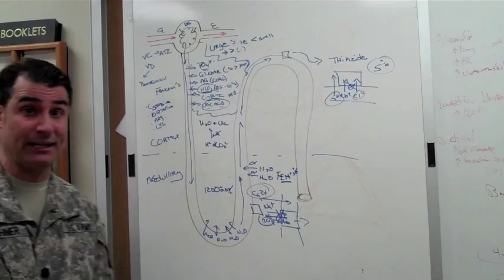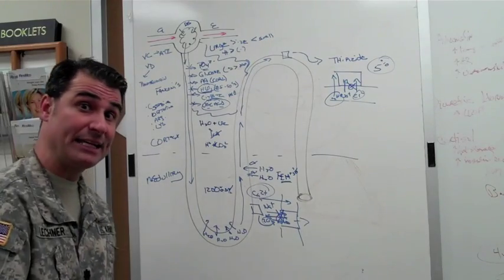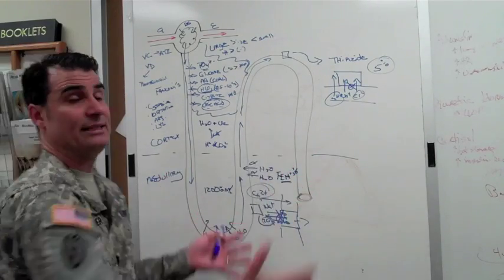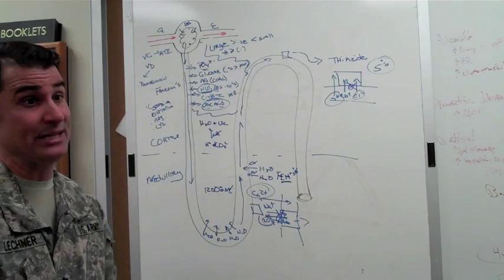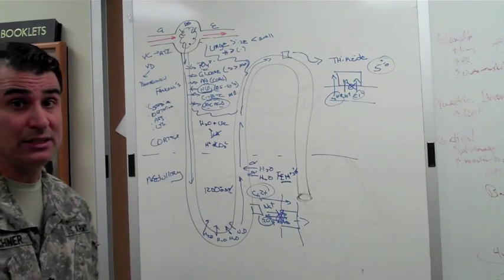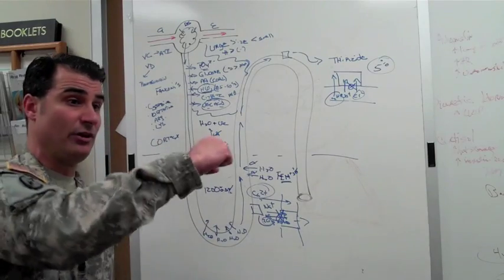Now the kidney is going to try like heck to reabsorb the chloride that it can, but when you've blocked it and there's none left to reabsorb, then it's going to start reabsorbing bicarb because it's got to maintain. The first thing kidney always maintains is volume.